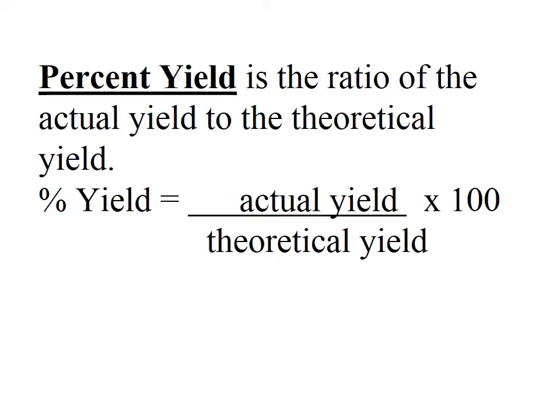So percent yield is the ratio of the actual yield to the theoretical yield out of a hundred. We take the actual yield divided by the theoretical and then multiply it by 100.